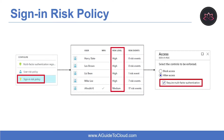Next is an example of a sign-in risk policy. Sign-in risk represents the probability that a given authentication request isn't authorized by the identity owner. For users of Azure Identity Protection, sign-in risk can be evaluated as part of a Conditional Access policy. The sign-in risk policy supports conditions including location, client app, and risky sign-in. With the information provided by the risky sign-in report, administrators can get real-time and aggregate risk levels associated with sign-in attempts, as well as detection type triggered, MFA details, device information, application information, and location information.